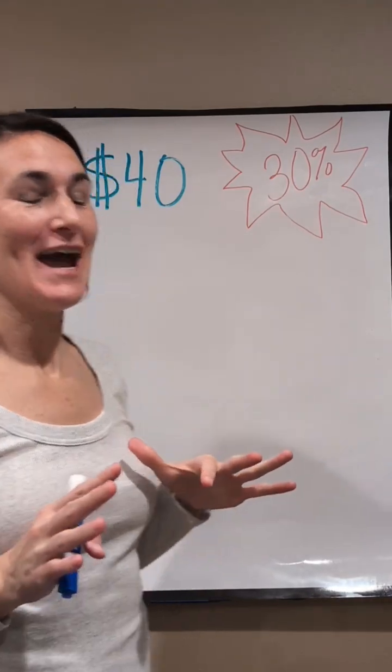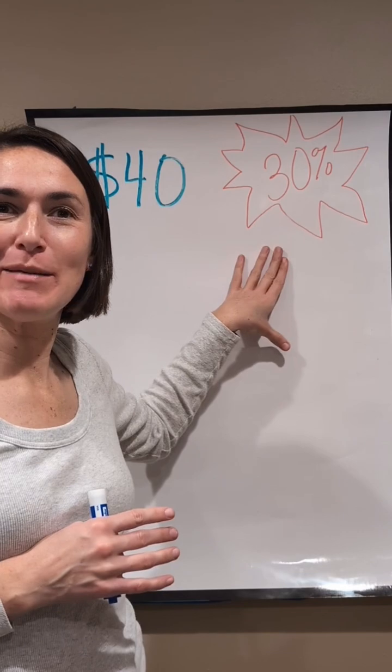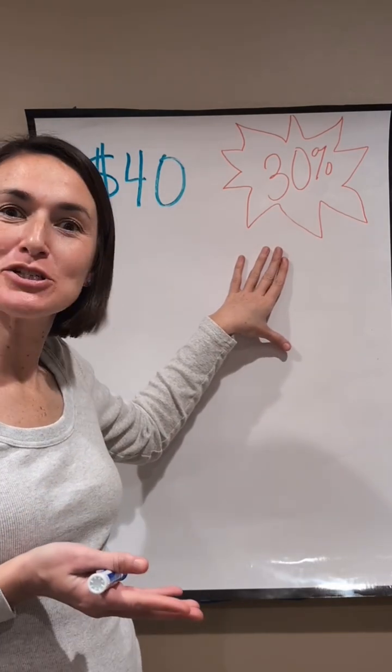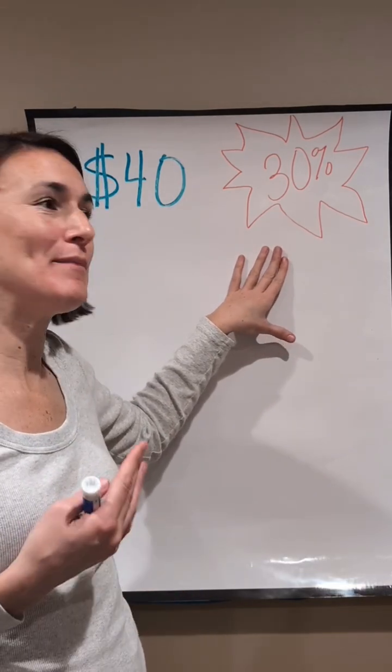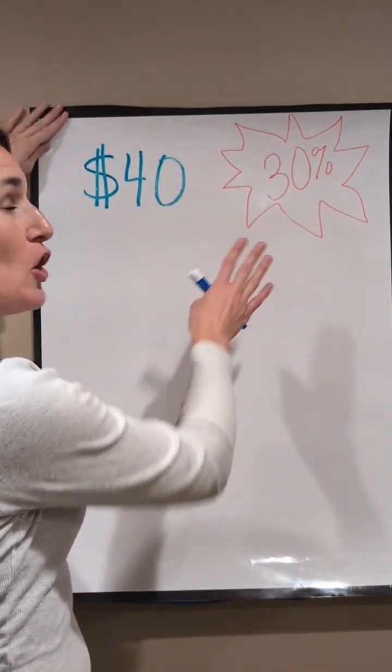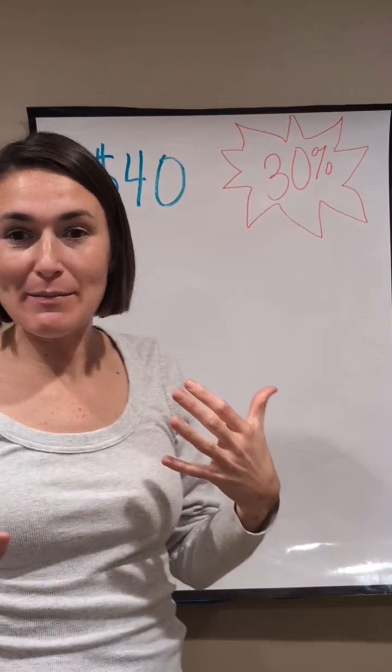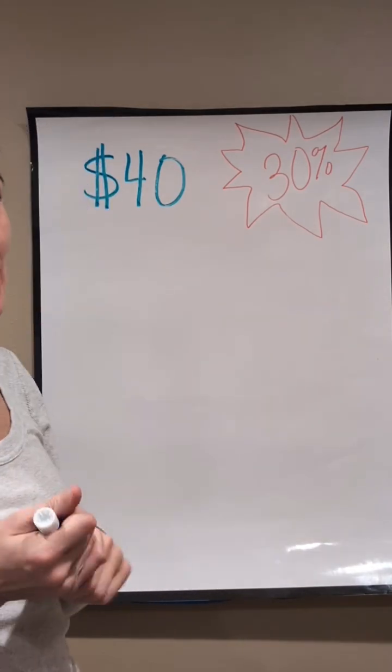There are lots of deals happening right now. So you might be seeing a lot of things like 30% off and you might be thinking to yourself, I'm not really sure how to quickly calculate that. And maybe you don't want to pull out your phone to do that math. So I'm going to talk to you about how you can quickly find 30% off of $40, thinking flexibly about numbers and using things that you might already know.